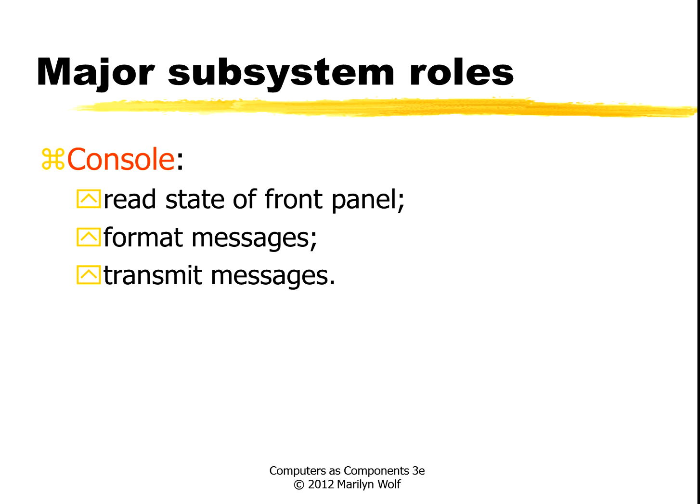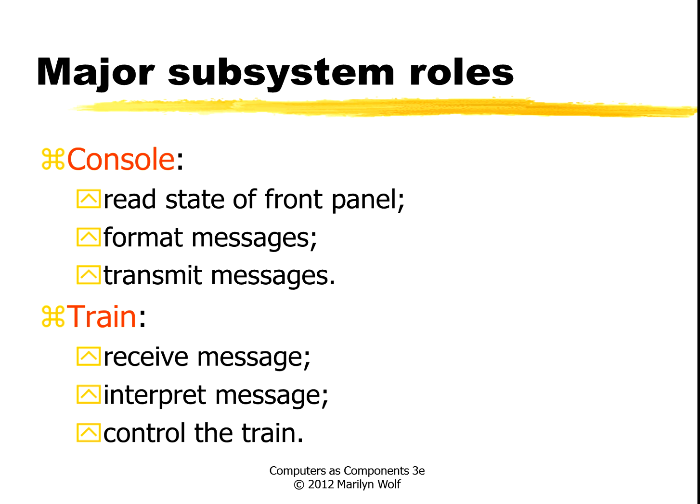What are the roles of the subsystems? The console reads the state of the front panel — that's the user interface, the input side of the user interface. It formats messages and transmits messages. The train receives a message, figures out what it means, and performs the action specified by the message.